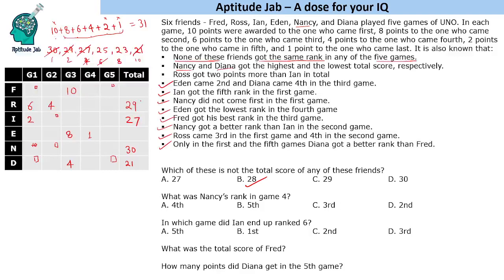Ross scores 29, meaning he is missing the 2-pointer. He already has 4 and 6, so he still needs 8, 10, and 1. Ross gets 1 point in game five. For game three, the missing values are 10, 1, 8, 4, 2, and 6. Since 2 cannot appear in a certain slot, we place 6 there and 2 elsewhere, fully completing game three.